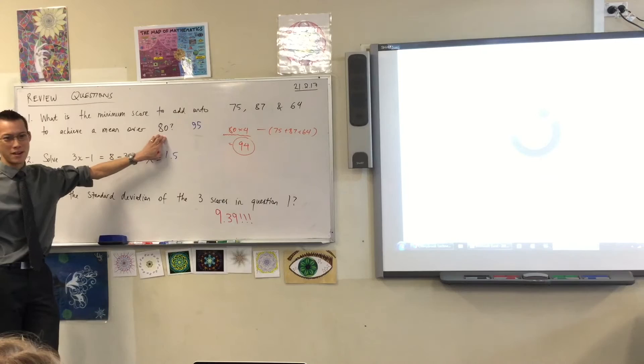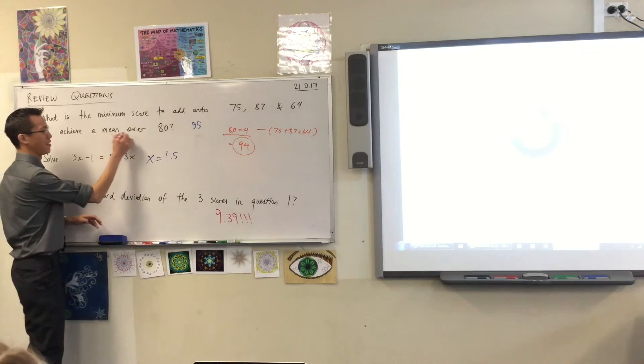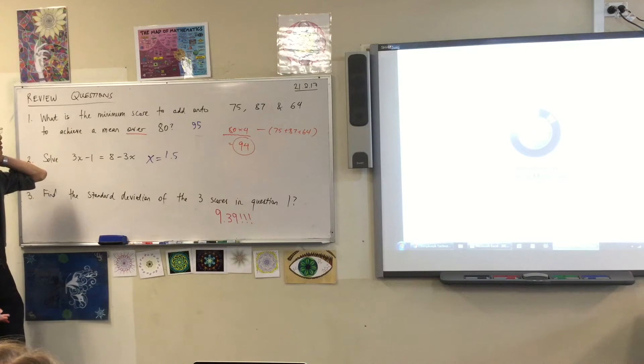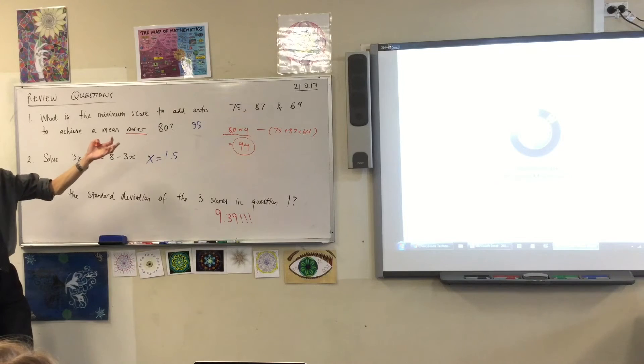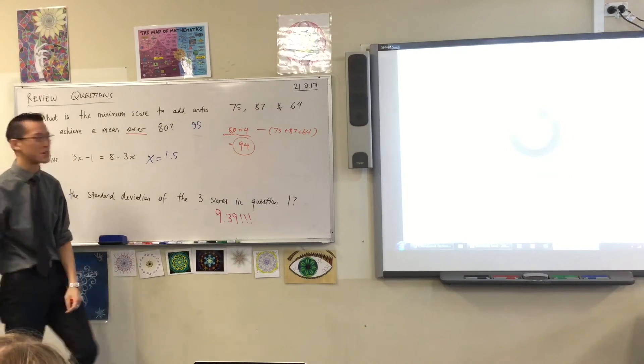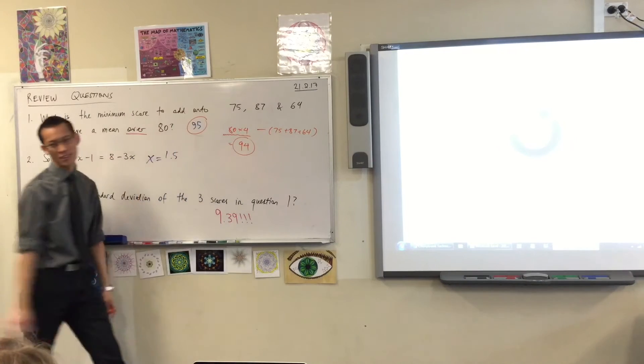Exactly, but we don't want the mean of 80 exactly, we want to be over 80. So therefore I didn't say anything about decimal points or anything like that. I suppose you could have said 94.1. Because the rest of the scores are whole numbers. Yeah, the rest of the scores are whole numbers. So I think 95 is a good conclusion. Yes.